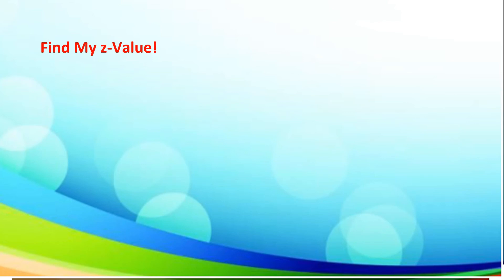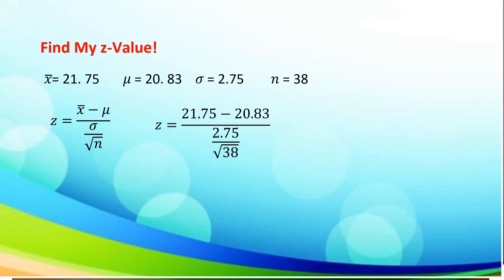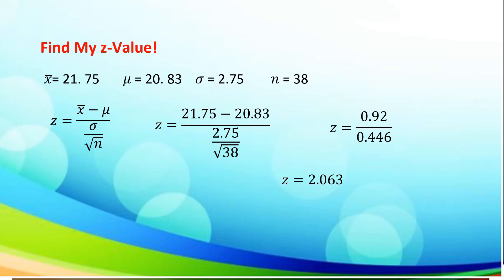Next, let's have this activity: Find my Z-value. With the following given: x-bar is 21.75, mu is 20.83, sigma is 2.75, and sample n is 38. Using the formula, we substitute: 21.75 minus 20.83, divided by the quotient of 2.75 and the square root of 38. 21.75 minus 20.83 is 0.92, and 2.75 divided by the square root of 38 is 0.446. Therefore, the value of Z is 2.063.